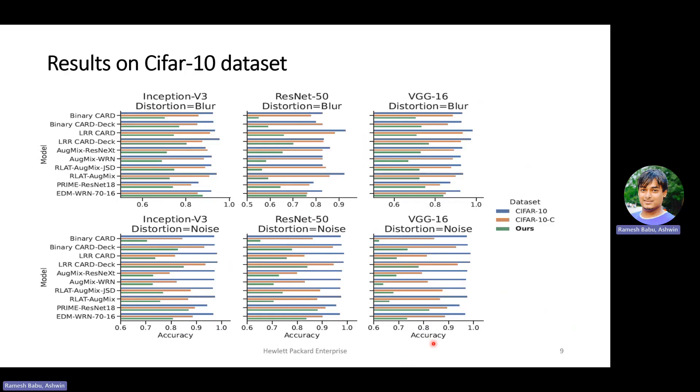So first, we will be looking at the performance of our benchmark on the CIFAR-10 dataset. In this slide, we compare the performance of popular training and retraining methods on the CIFAR-10C and our proposed benchmark. The y-axis represents the method and the x-axis represents the accuracy. We have evaluated with two different types of distortions, which is the Gaussian blur and the Gaussian noise and three popular architectures. When comparing all the six graphs, the performance on our generated benchmark is the lowest compared to the original set and the CIFAR-10C.